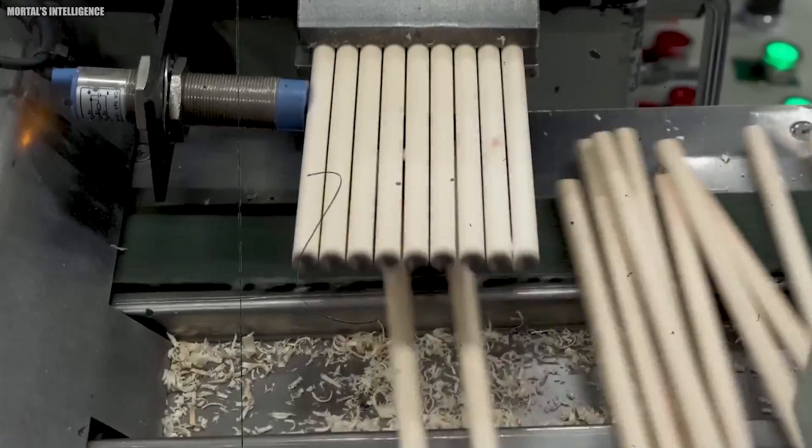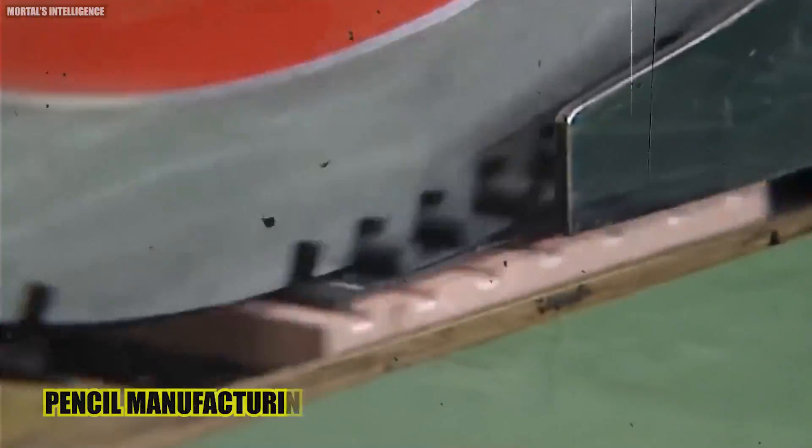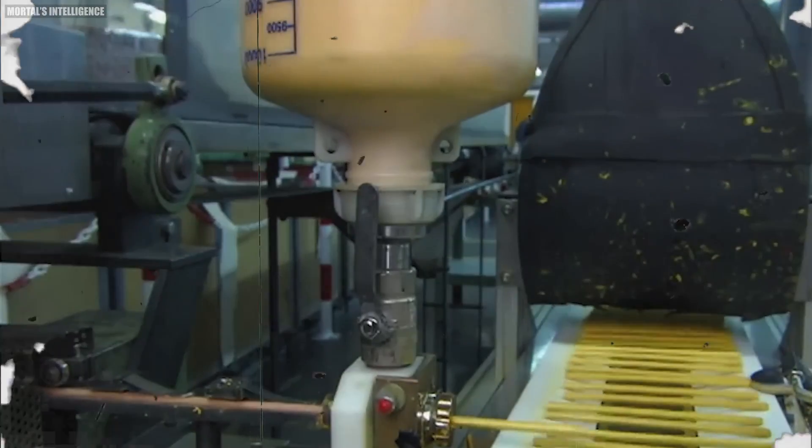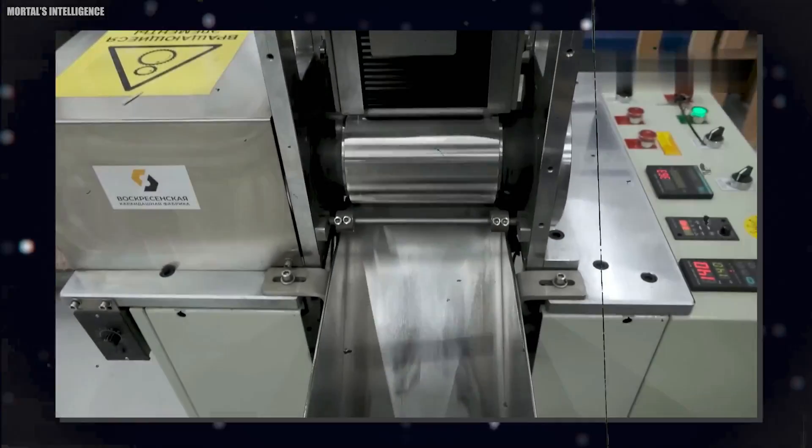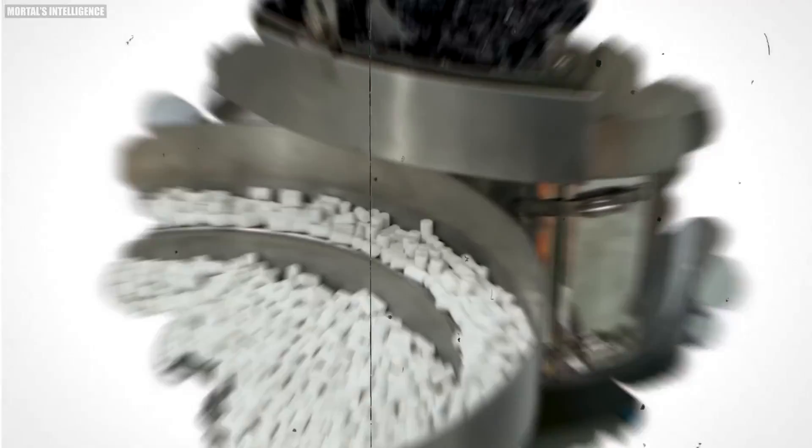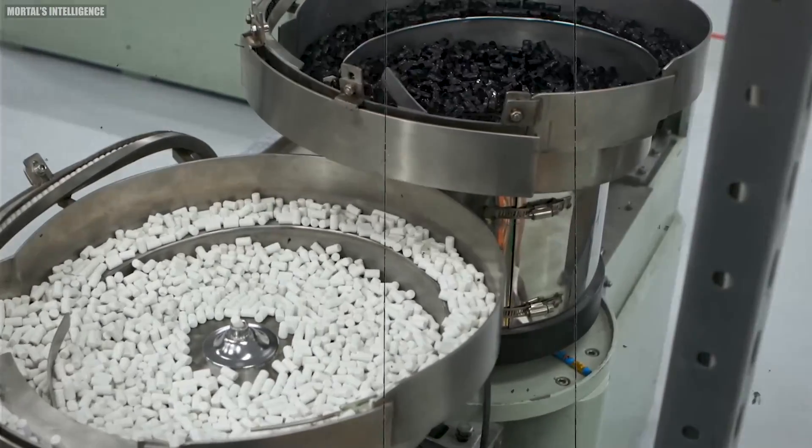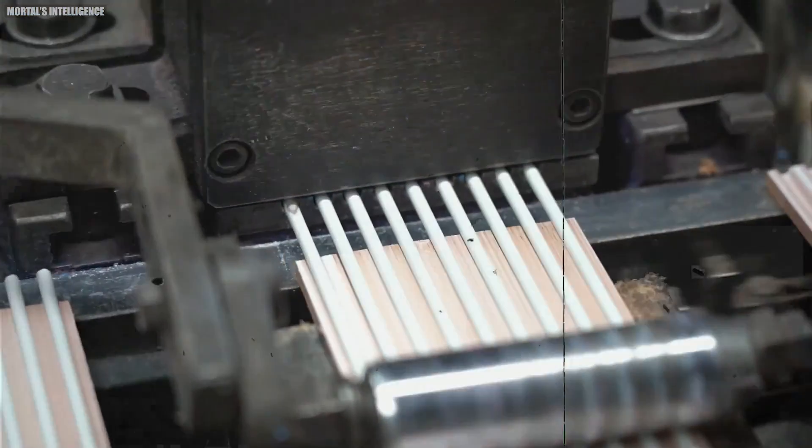One fascinating aspect of pencil manufacturing is the use of specialized machinery. These machines are designed to handle the delicate materials and precise tolerances required for pencil production. For example, the graphite extrusion machines use high pressure dies to create the perfect graphite rods, while the casing machines ensure that each pencil is perfectly aligned and glued together. These machines are operated by highly skilled technicians with years of experience.